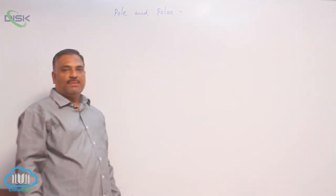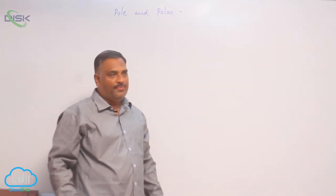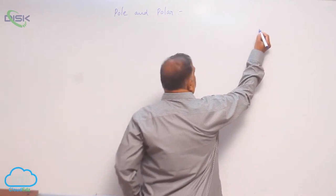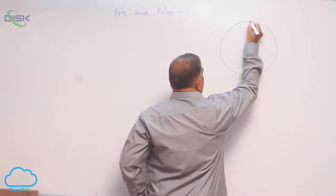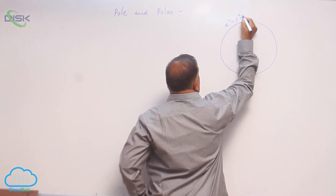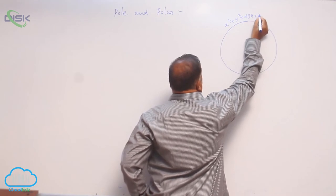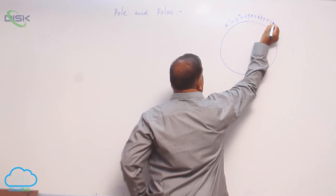We will discuss a new concept, pole and polar. Let us consider the standard general equation of a circle: x square plus y square plus 2gx plus 2fy plus c is equal to 0.